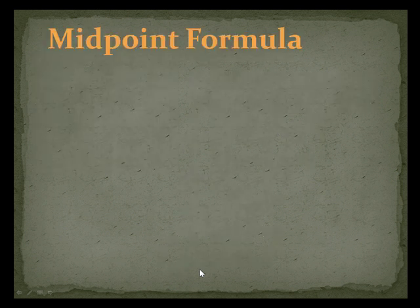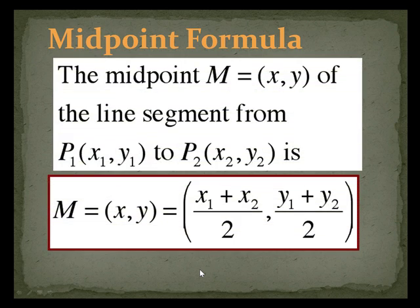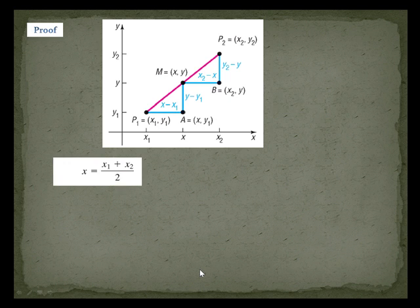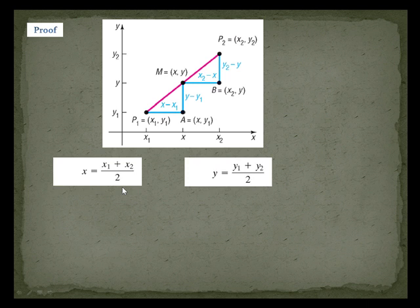Next, let's look at the midpoint formula. The midpoint M(x, y) — just an ordered pair — of the line segment from point 1 to point 2 is this formula. You're going to want to write this one down too. Basically, x is found by taking the average of the two x-values, and y works exactly the same way. That's how our formula is found.